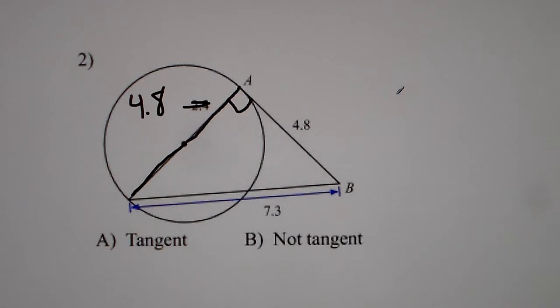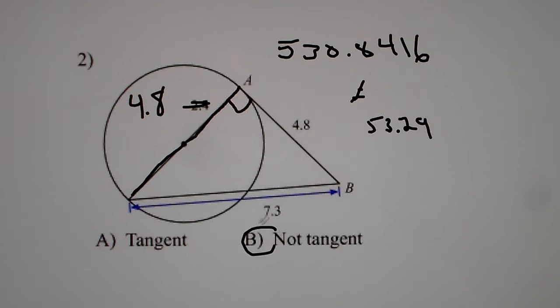And we get 46.16. And we want to see if that's 7.3 squared. 7.3 squared, put that in the calculator, we get 53.29. So clearly that does not equal 53.29. So this is not tangent.